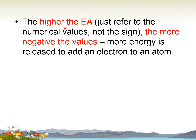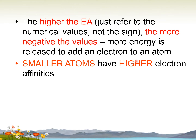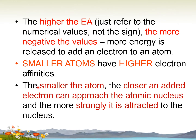The higher the EA — electron affinity — just refers to the numerical values, not the sign, positive or negative. The more negative the values, the more energy is released to add an electron to an atom. The smaller atoms have higher electron affinities because the closer the added electron can approach the atomic nucleus, the more strongly it is attracted to the nucleus.